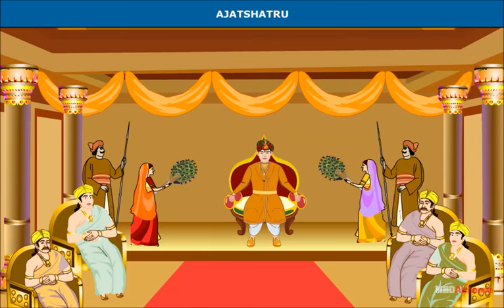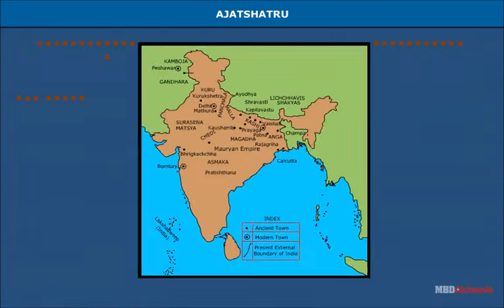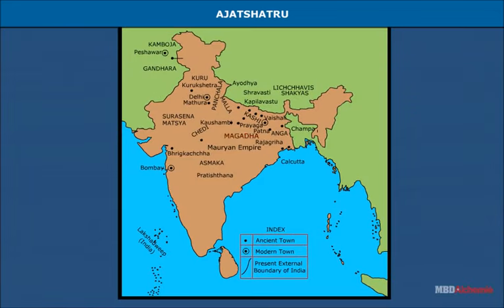Ajatashatru, son of Bimbisara, was a very ambitious ruler. He ruled over Magadha from 493 BC to 462 BC. He invaded the territories of Kosala, the kingdom of Vajji, and annexed the kingdom of Kashi. Magadha became the most powerful kingdom of northern India under him. After the death of Ajatashatru, two important dynasties — the Shishunagas and Nandas — ruled Magadha. Finally the Nandas were succeeded by the Maurya dynasty.